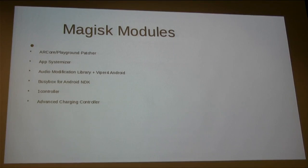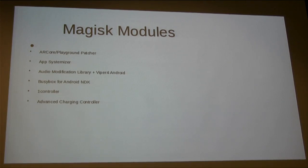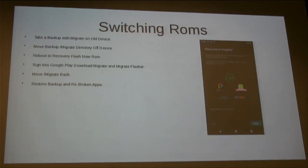One Controller is quite useful if you play games on your phone, as it systemlessly adds controller maps for PS4, Xbox One — without modifying system files, because that's how Magisk works. And then you've got Advanced Charging Controller, which is a Magisk module that helps preserve the life of your battery. You can set thresholds of when you want your phone to stop charging, like at 90% or 80%, to prevent over-discharge.